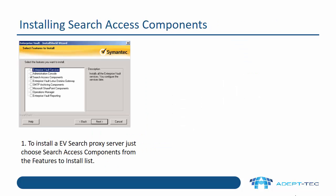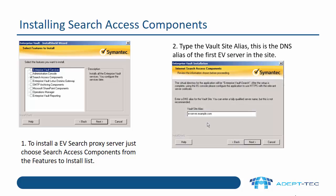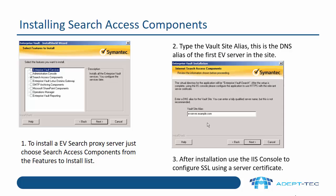If you're going to install the EV Search proxy server, then all you need to do in the 'select features to install' box is choose search access components. On the next screen, you then type the vault site alias — this is the DNS alias to the first EV server in the site. After installation, use the IIS console to configure SSL using a service certificate from a public certificate authority.